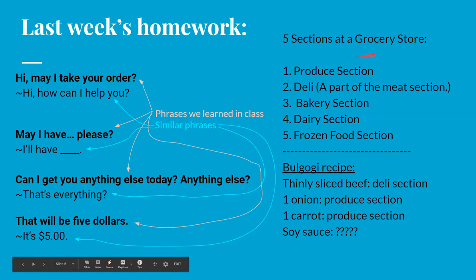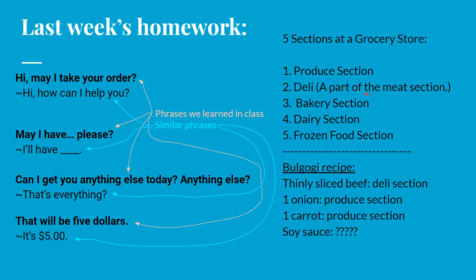I'm very interested in the second part of the homework. What were the five sections at the grocery store that Bob went to? The five sections are: number one, the produce section; number two, the deli — and the deli is part of the meat section; number three, the bakery section; number four, the dairy section; and number five, the frozen food section. For homework, we also talked about ingredients for bulgogi.